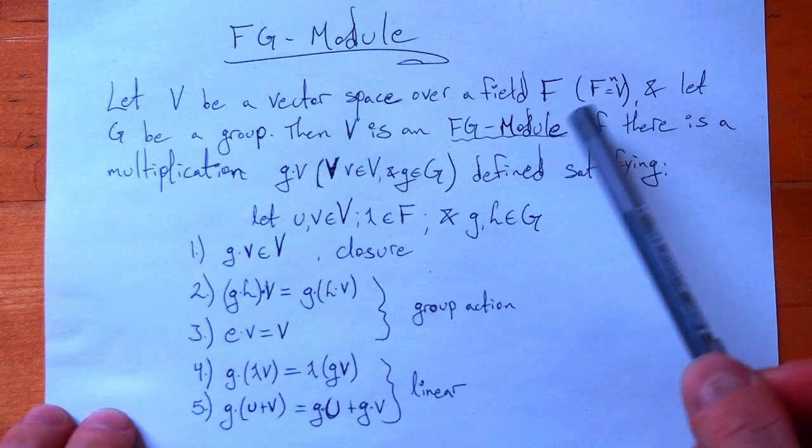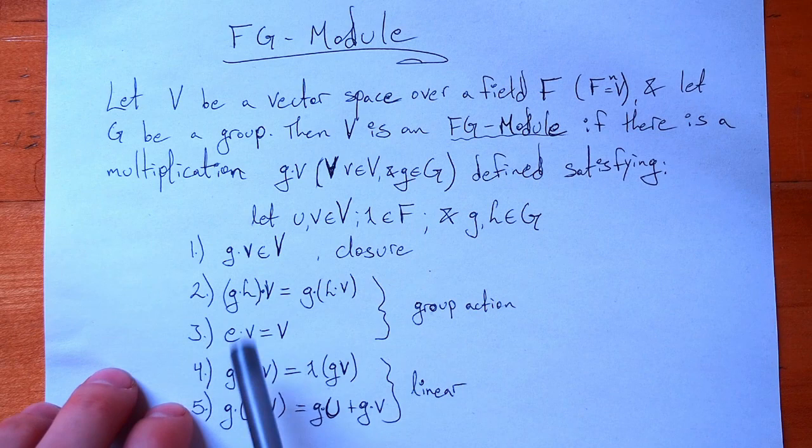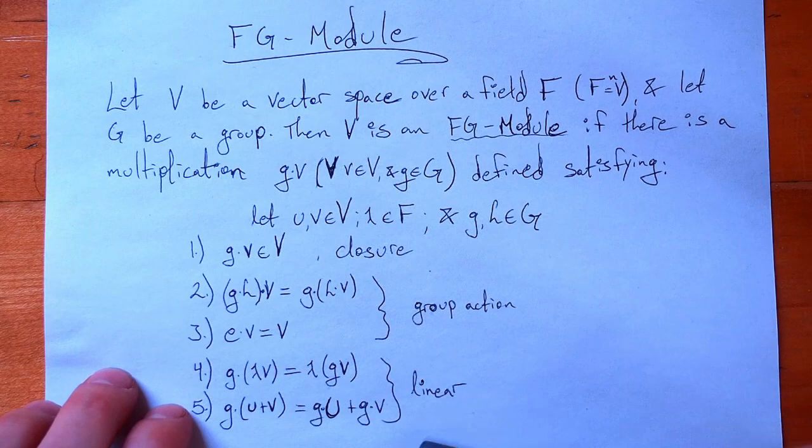Now, what does that have to do with representation theory? It turns out that if we represent all of these group elements as matrices, they're going to satisfy these five properties and we'll have an FG module. So that's what I'm going to show now.